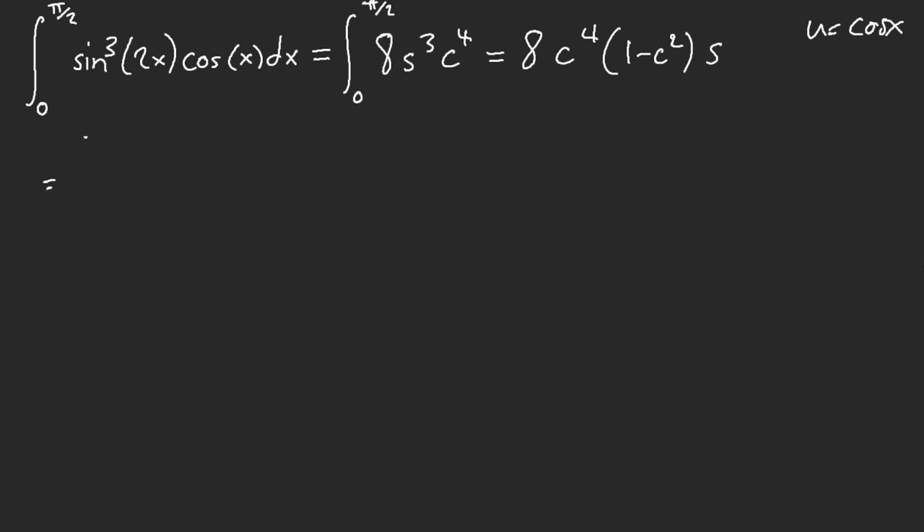Now what we have here is from 0 to 1 of 8 u4 times 1 minus u squared du. So now what we have is u4 minus u6.